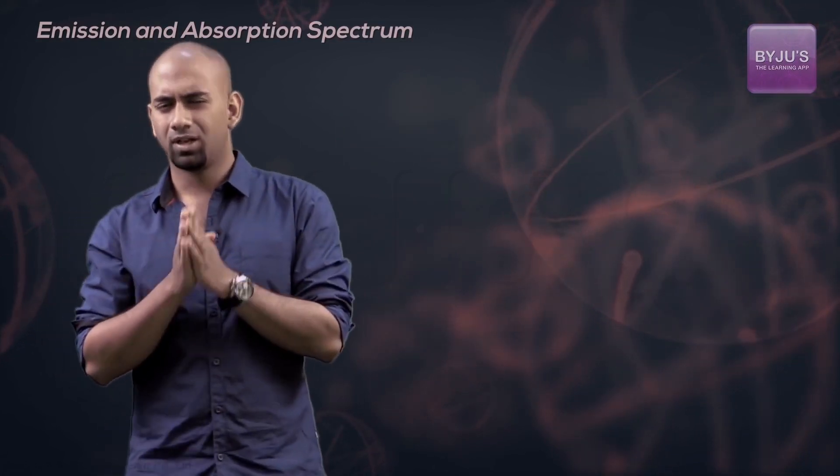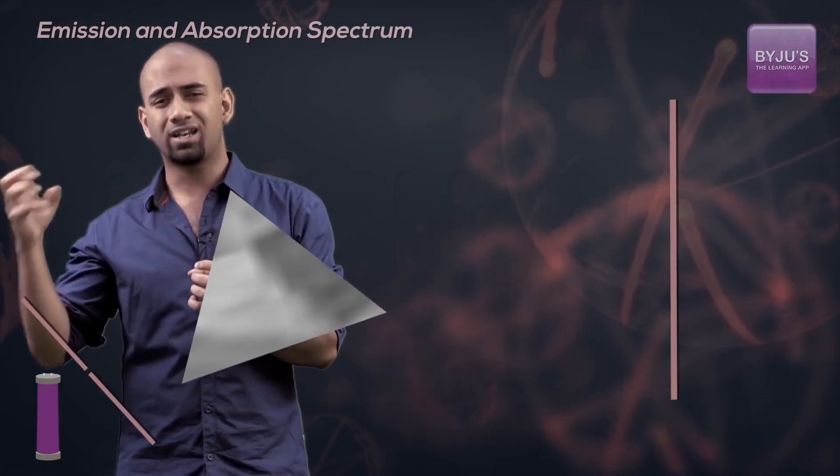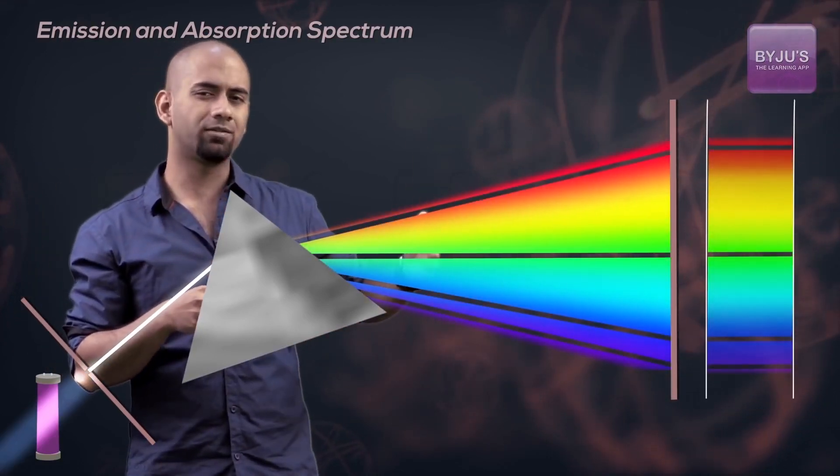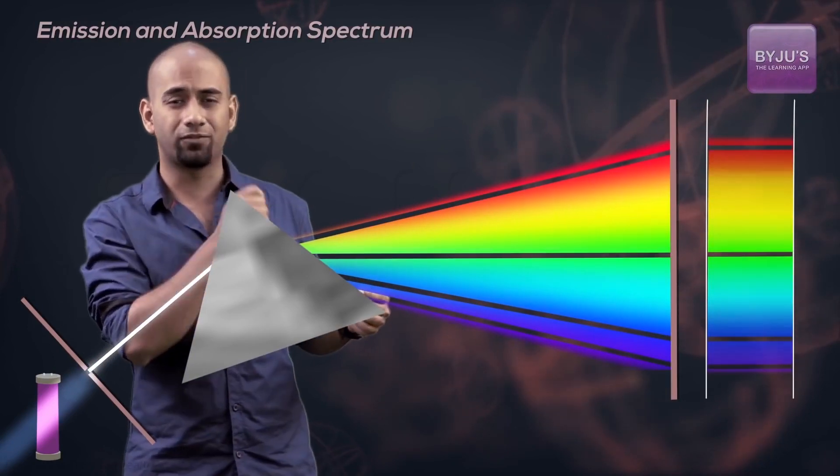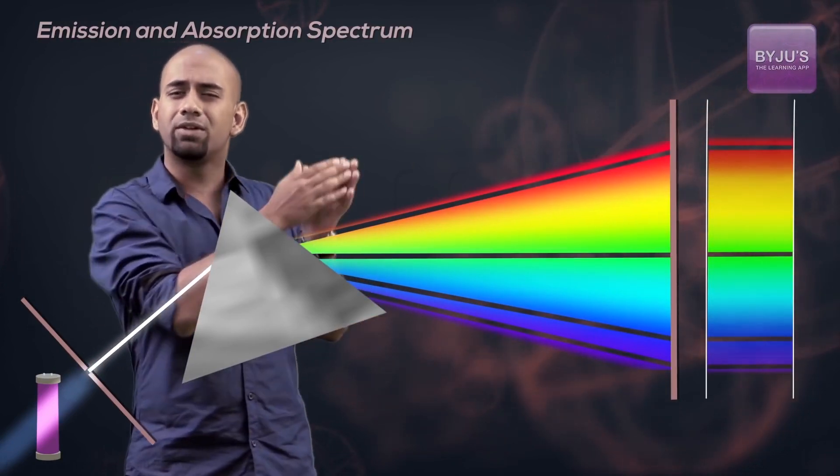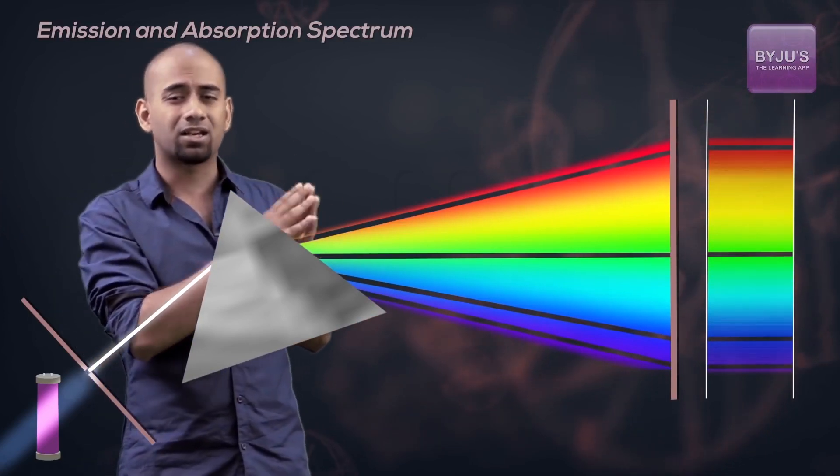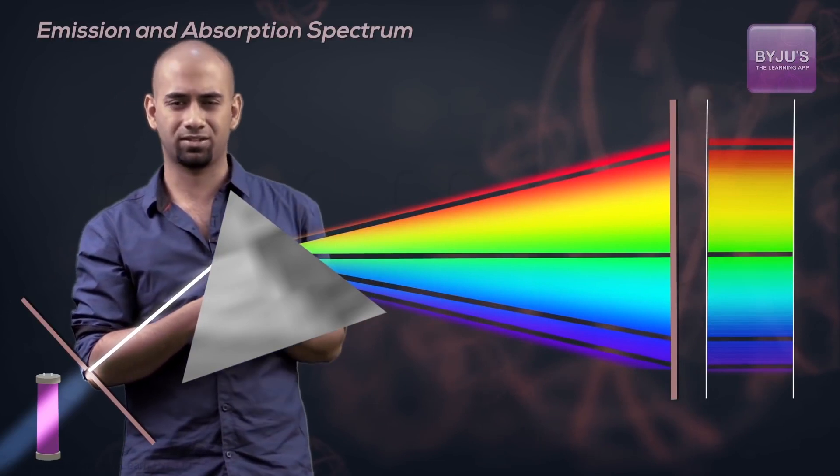It was also found that when white light was shone through this element, the spectrum observed had a few dark lines, and these dark lines corresponded exactly with the spectral lines we saw in the emission case.